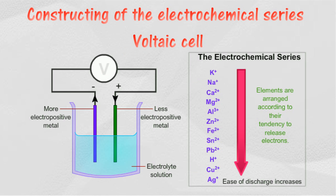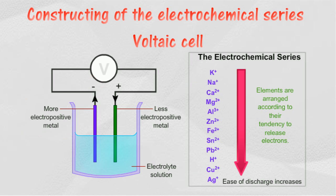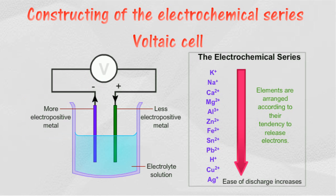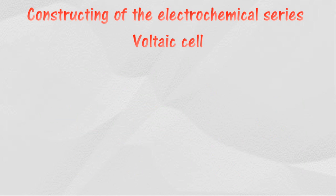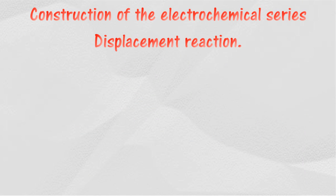In a simple cell, the metal that is more electropositive acts as the negative terminal, while the metal that is less electropositive acts as the positive terminal. In a displacement reaction, a metal that is more electropositive can displace another metal which is less electropositive from its salt solution.